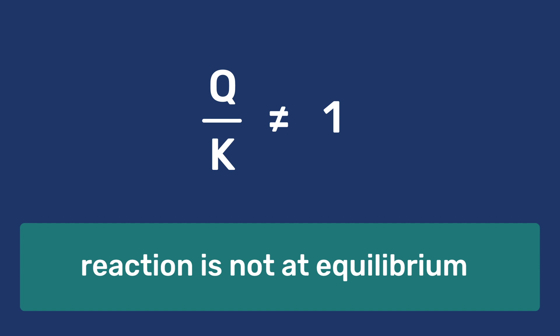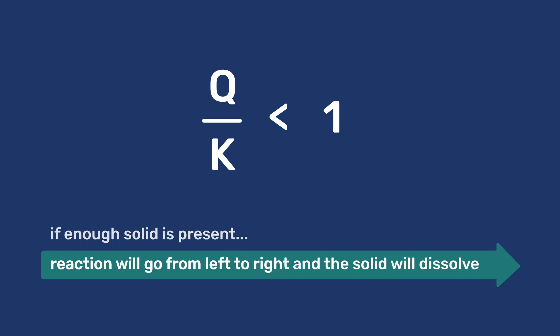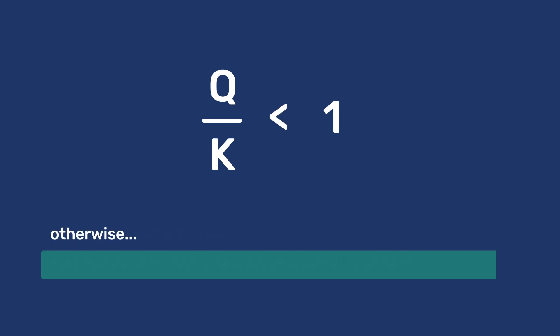If Q over K is not equal to 1, then the reaction is not at equilibrium. If Q over K is smaller than 1, the reaction will go from left to right and the solid will dissolve. If enough solid is present, dissolution will stop when equilibrium is reached. Otherwise, the solid will completely dissolve.